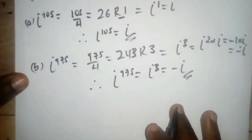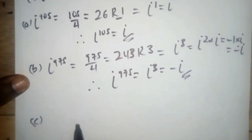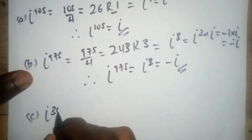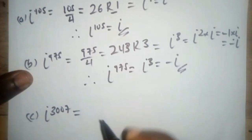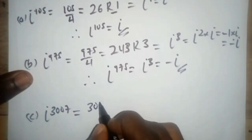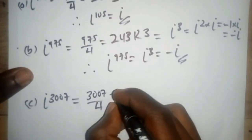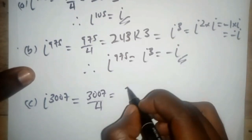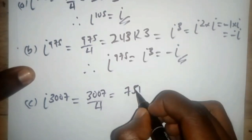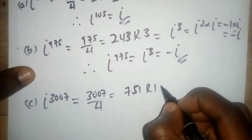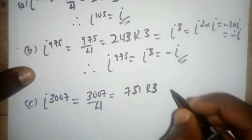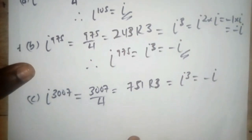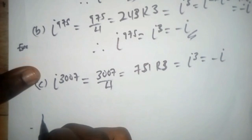Then we have part c: i to the power 3000. We divide 3000 by four, which gives 750 with a remainder of zero — effectively remainder zero means we use remainder four equivalently, but here 3000 divided by 4 gives remainder zero, so we get i to the power 4, which equals one. Wait — actually the remainder is zero, and i to the power four equals one. So i to the power 3000 equals one.